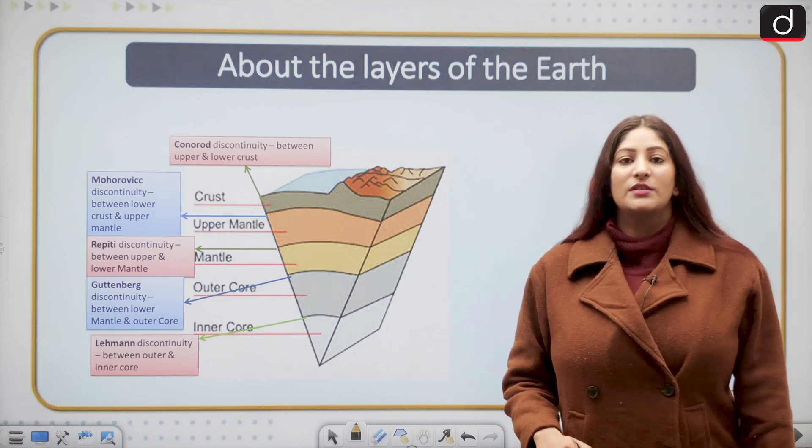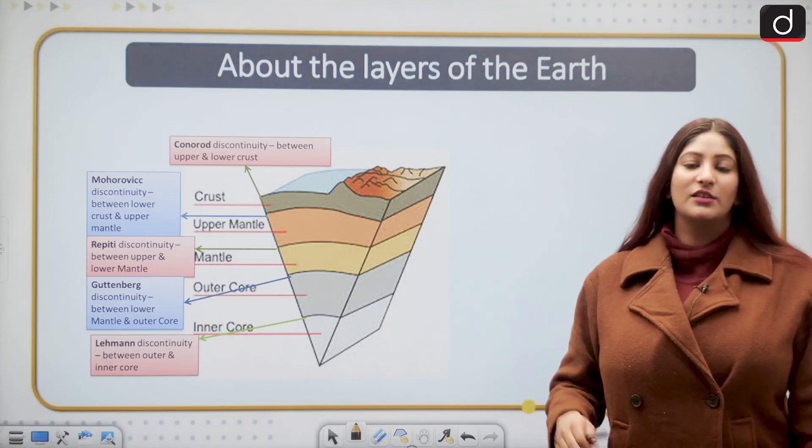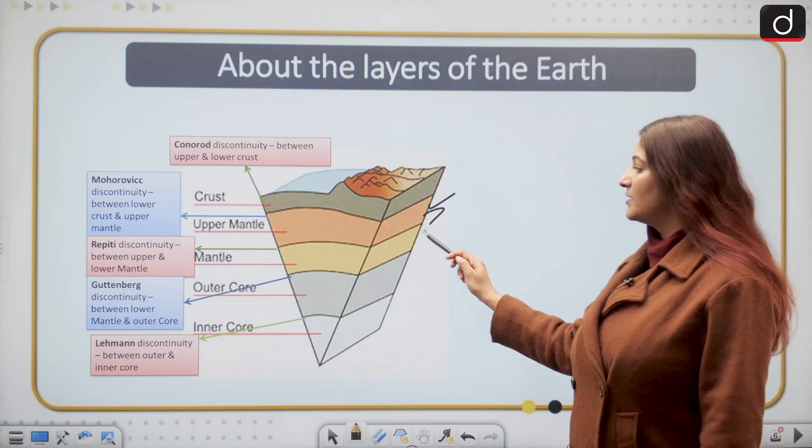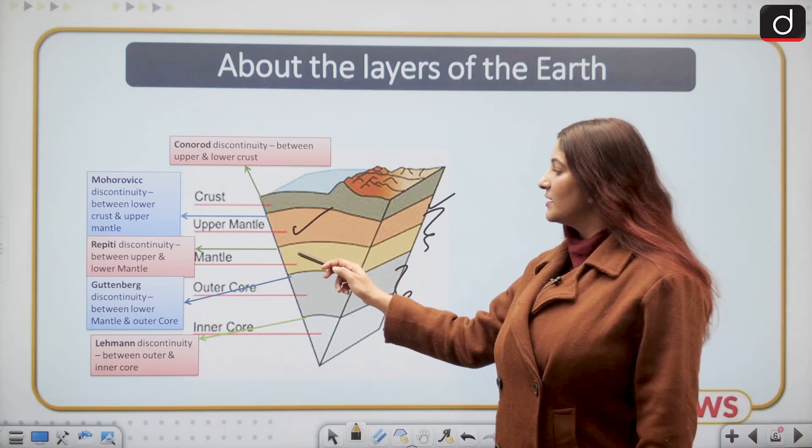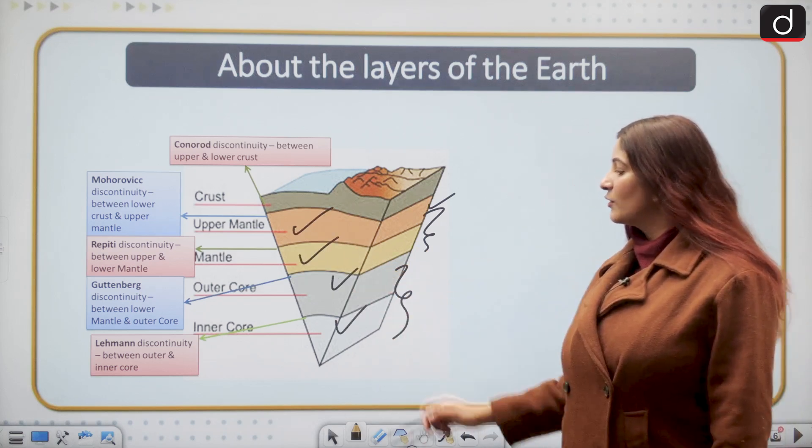If we talk about the layers of the earth, the terrestrial part is divided into crust, mantle, and core. Mantle is further divided into the upper mantle and lower mantle. Then we have the outer core and the inner core.